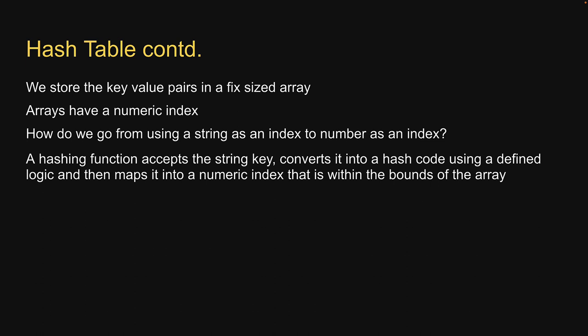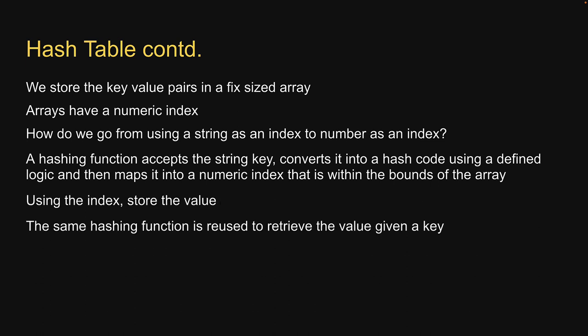A hashing function accepts the string key, converts it into a hash code using a defined logic, and then maps it into a numeric index that is within the bounds of the array. Once we have that index, we store the value. The same hashing function is reused to retrieve the value given a key.